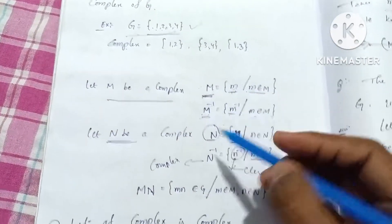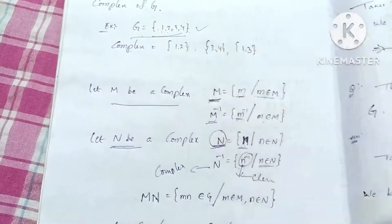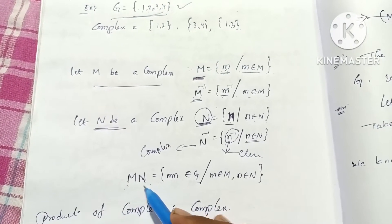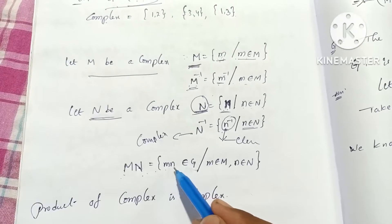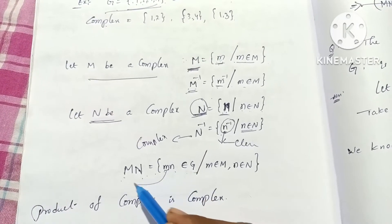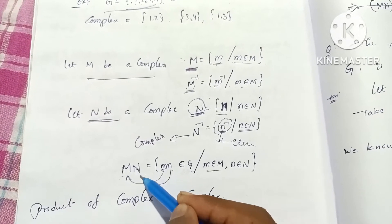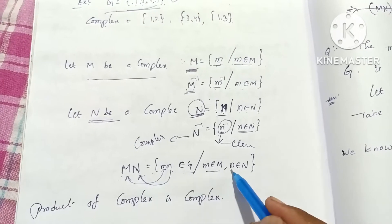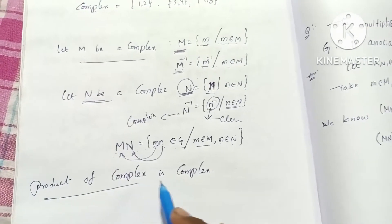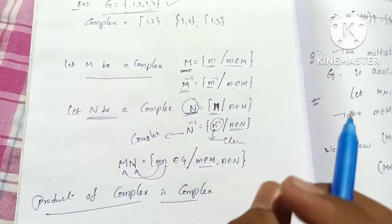Now let's define the multiplication of two complexes. MN equals capital M into capital N, which is the set of elements small m into small n, where m belongs to capital M and n belongs to capital N, and the product mn belongs to G. The product of two complexes is itself a complex.